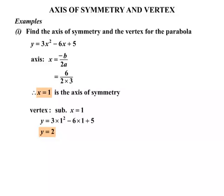So there we have it. x equals 1 and y equals 2. So therefore we say the vertex is V, V for vertex, coordinates 1, 2.